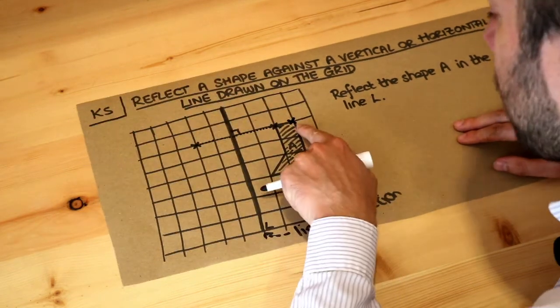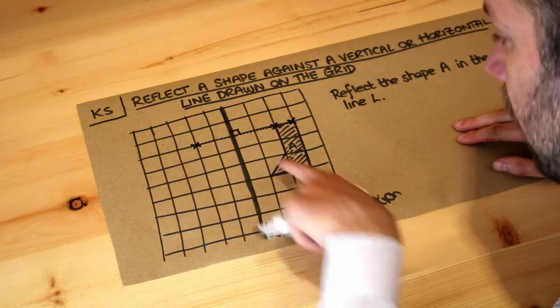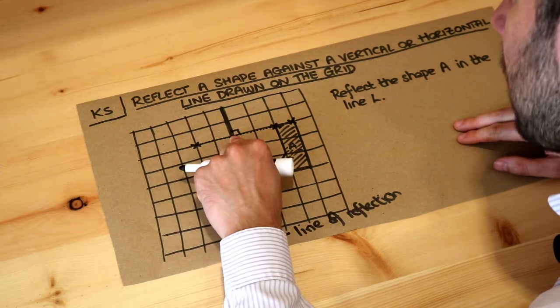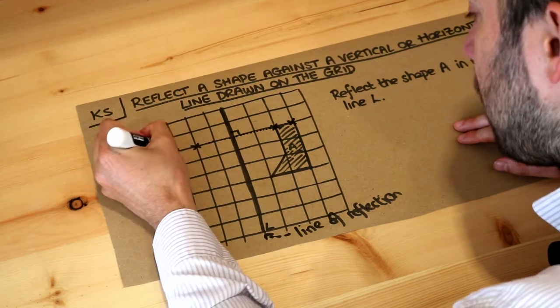Let's do that with this point. So let's go straight towards this line of reflection, one two three until on the line of reflection, and then do the same again, one two three, so it's this point here.